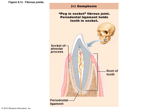The second type is called a gomphosis, which is like a peg in a socket. The tissue that holds the teeth to the jawbone is called the periodontal ligament, and that anchors the teeth to the alveolar processes in the maxilla and mandible. These are also considered synarthrotic joints — teeth are immovable, or they should be.